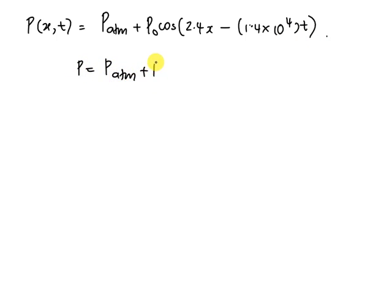The general form is P_atm plus P_0 cos(kx - ωt).